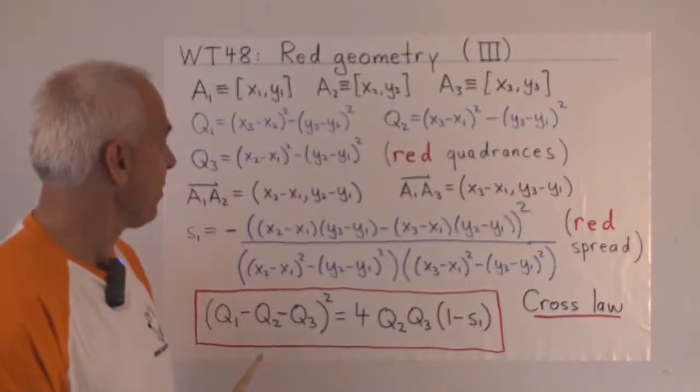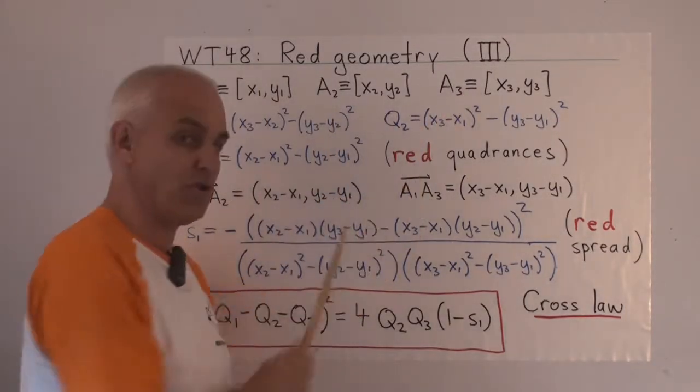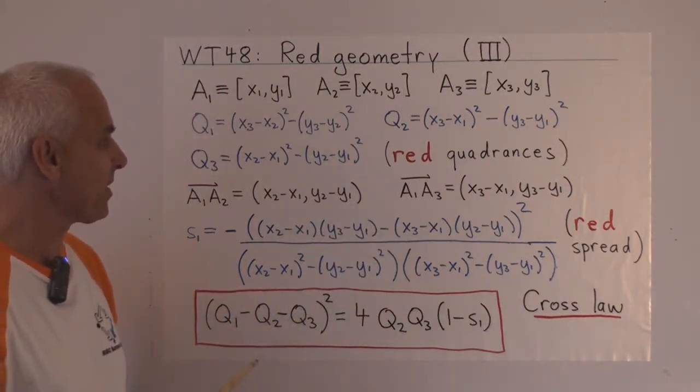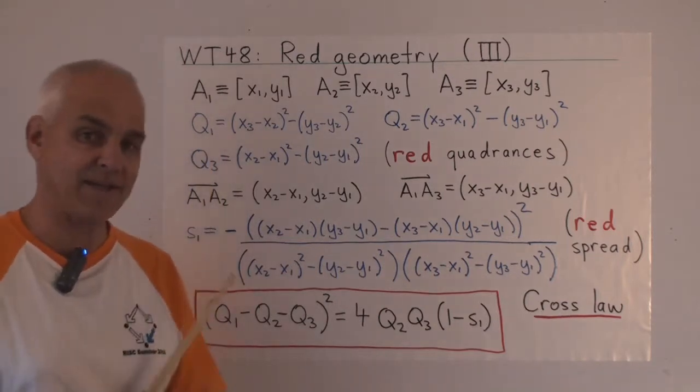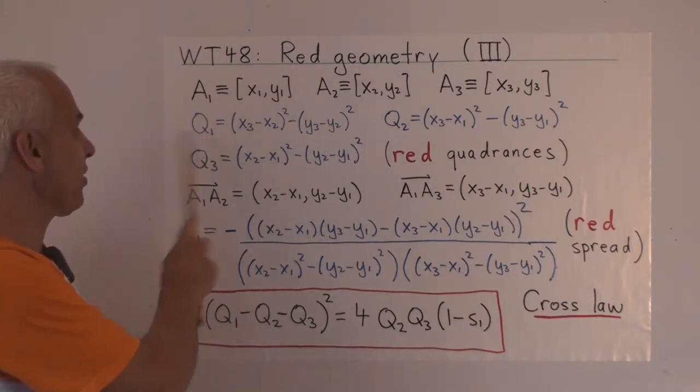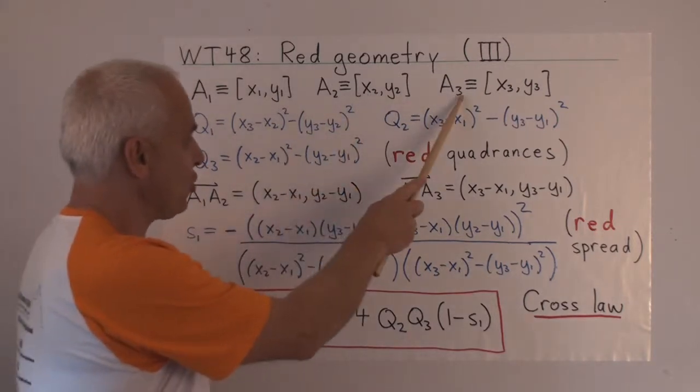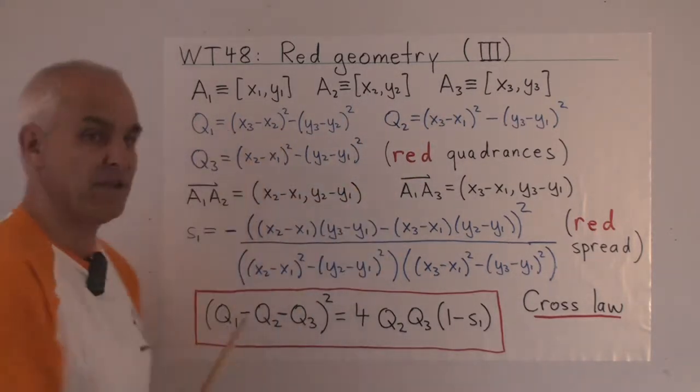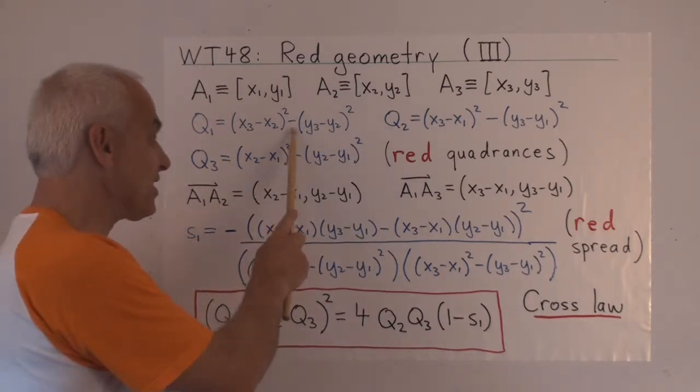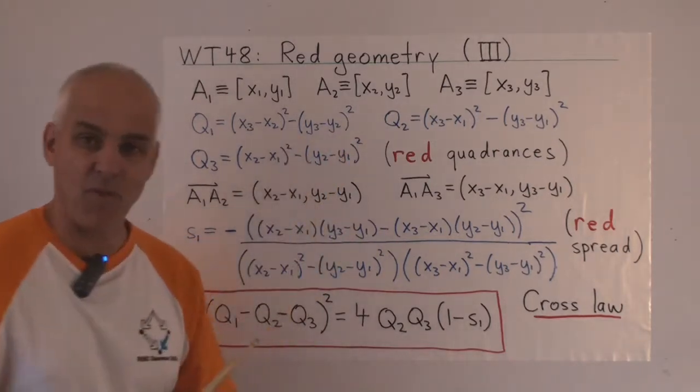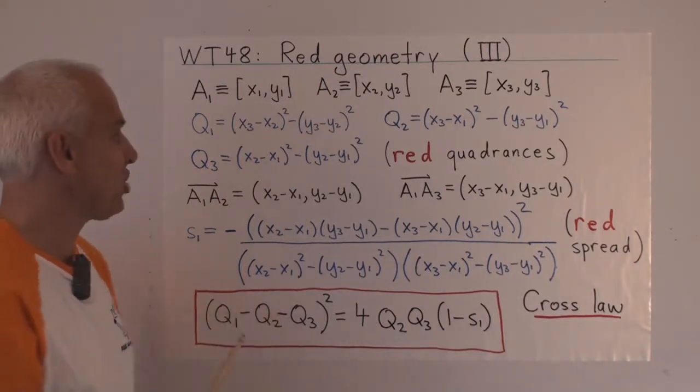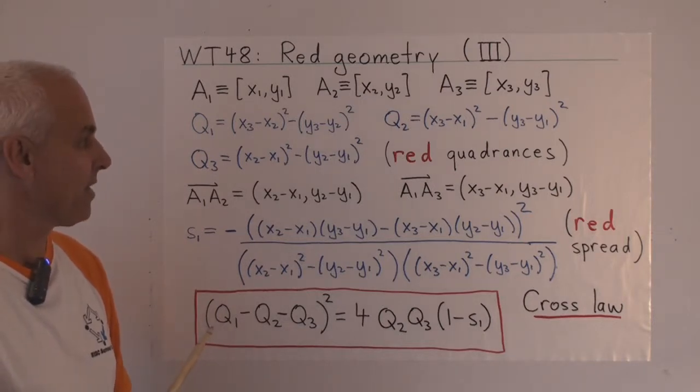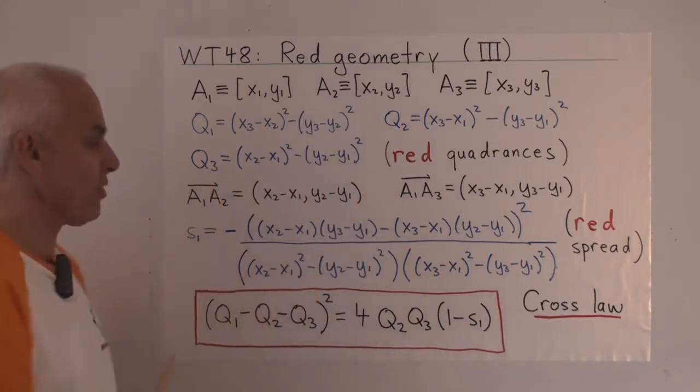So let me remind you that if we have three points in the plane as usual with coordinates x1, y1, x2, y2, x3, y3, then the quadrances in the red setting between them are as follows. So the quadrance between A2 and A3 we call Q1 and it's given by the square of the difference of the x coordinates minus the square of the difference in the y coordinates. So a lot like Euclidean geometry except there's a minus sign here instead of a plus sign. Here are the other two quadrances Q2 and Q3.